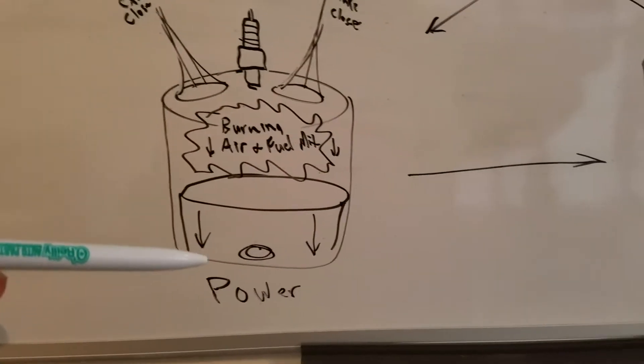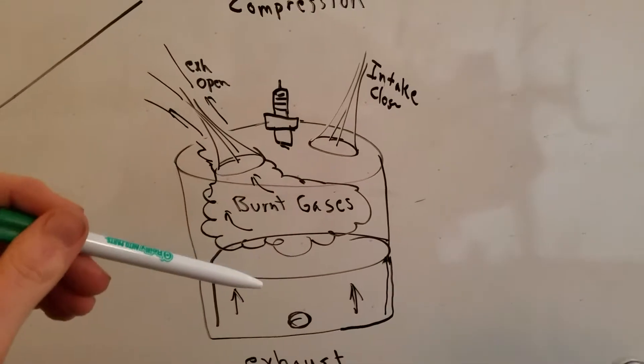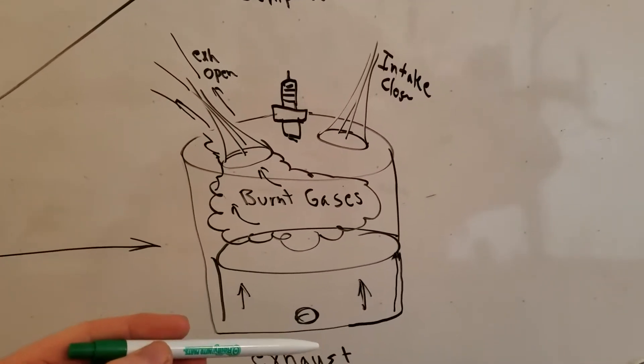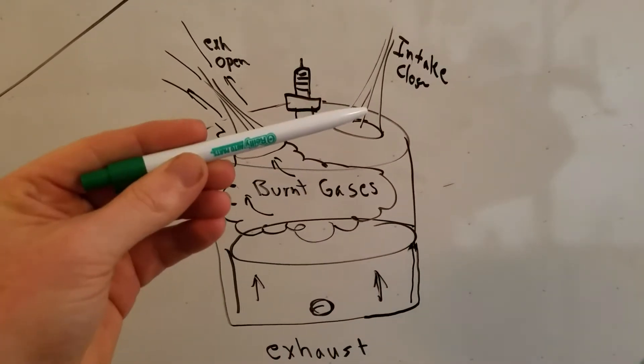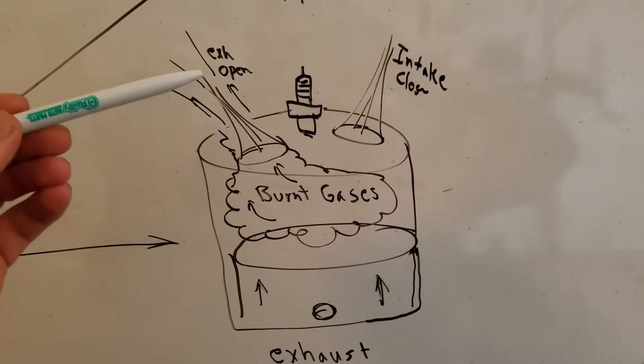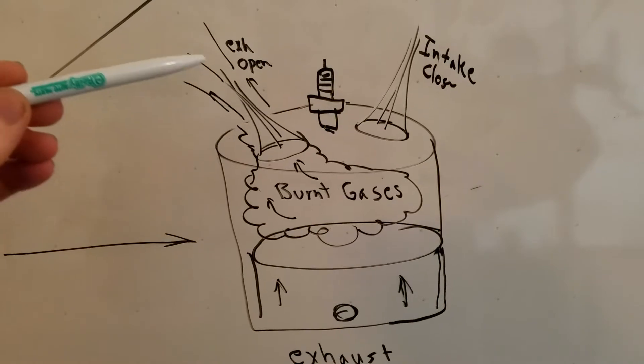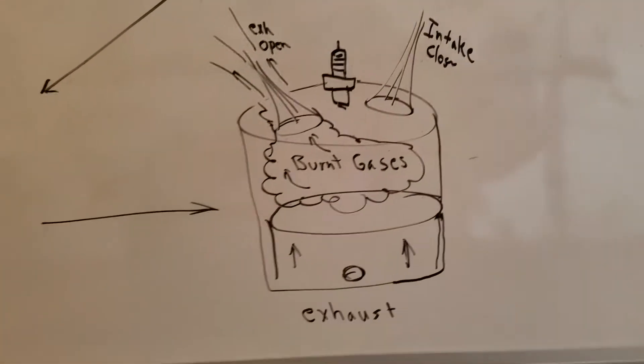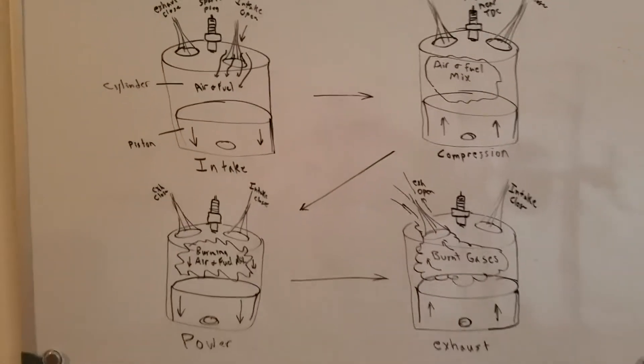The next sequence is going to be the exhaust sequence. That's where our piston is all the way down after the power sequence and begins to travel back up. Our intake valve is closed, the exhaust valve opens, and the burnt gases are pushed out going through the exhaust, making that awesome sound.